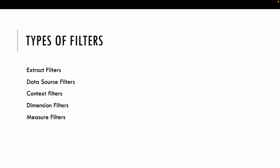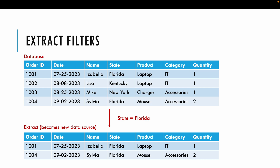Let's see the types of filters. There are five types of filters, and this is the order in which they execute. Extract filters get executed first, followed by all the others. So if you have an extract filter and a dimension filter in your workbook, the extract filter will get executed first, and based on its result, the dimension filter will get executed.